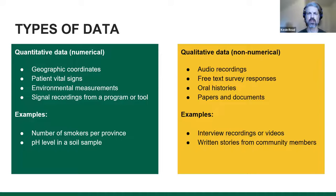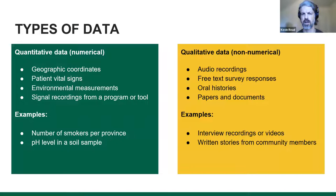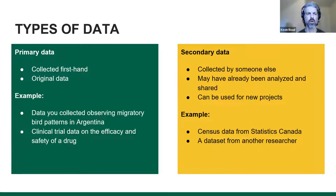When we're thinking about different types of data, I like to separate them into the two most common ways we might think about data from a research perspective. One is quantitative data — everything from geographic coordinates to measures of the environment or signal recordings — and the other is qualitative data, which might be free text responses in a survey, oral histories, or papers and documents. Having a good understanding of these two can help you think about what kinds of documentation or data management you might want to do.